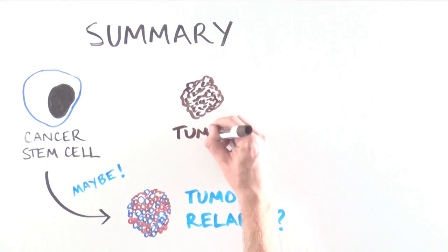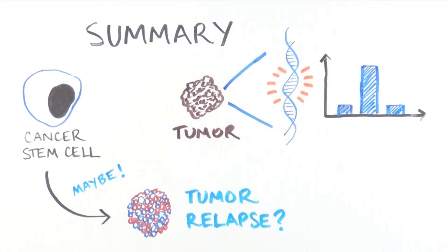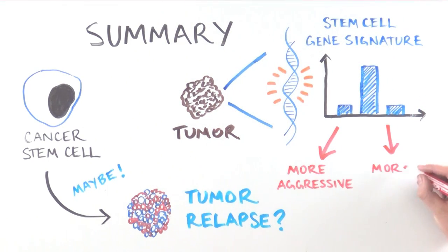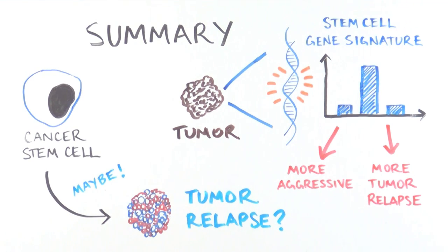This study also tells us that the more the cancer gene signature resembles that of a stem cell, the more aggressive the tumor is, and the more likely the patient is to experience tumor relapse.